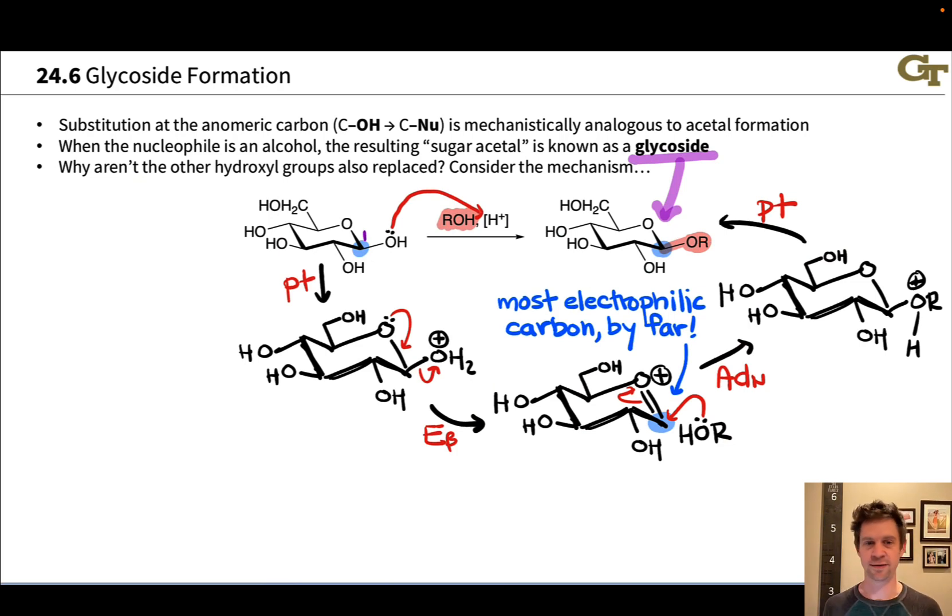It's basically an SN1 type process. We create a good leaving group first. That's the purpose of the first proton transfer, but then that leaving group departs and we've got a cation just like an SN1 where the leaving group departs. You got a carbocation. This one just happens to be oxygen stabilized. Then a nucleophile comes in and then we lose a proton to get to the neutral product. But that nucleophile coming in is the same idea as SN1, where a nucleophile attacks the carbocation. So what we've got here, although we're using the labels beta elimination and nucleophilic addition because of the involvement of the oxygen inside the ring, basically what we've got here is an acid catalyzed SN1 process.